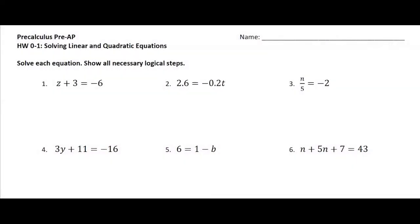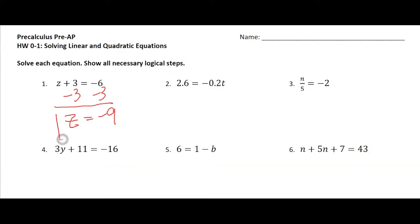For these first few problems, we're going to use the properties of equality. For this first one, we're going to subtract 3 on both sides, and I should get z equals negative 9. I'm trying to undo what's being done to the variable.